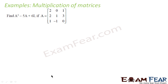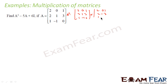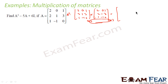First, let's find A squared, since that's what we need to compute first. A squared is nothing but A multiplied by A. So we have the matrix [2, 0, 1; 2, 1, 3; 1, -1, 0] multiplied by [2, 0, 1; 2, 1, 3; 1, -1, 0]. Since this is 3x3 times 3x3, multiplication is possible and the result will be a 3x3 matrix.